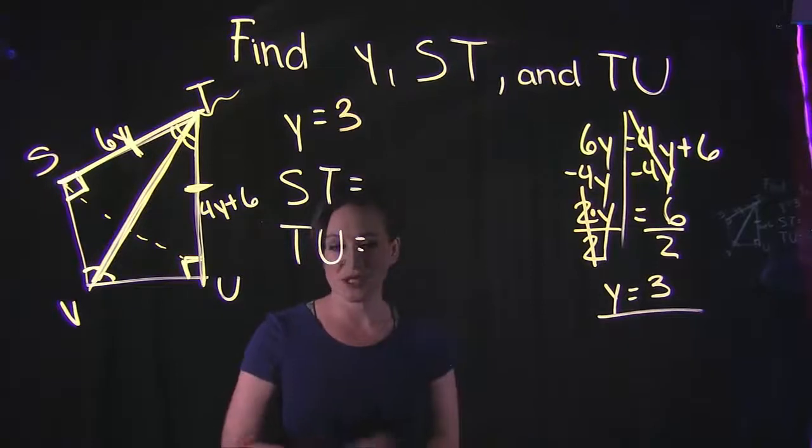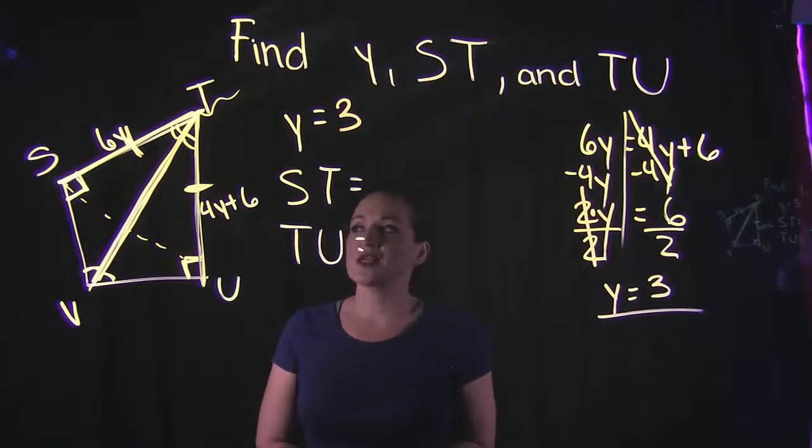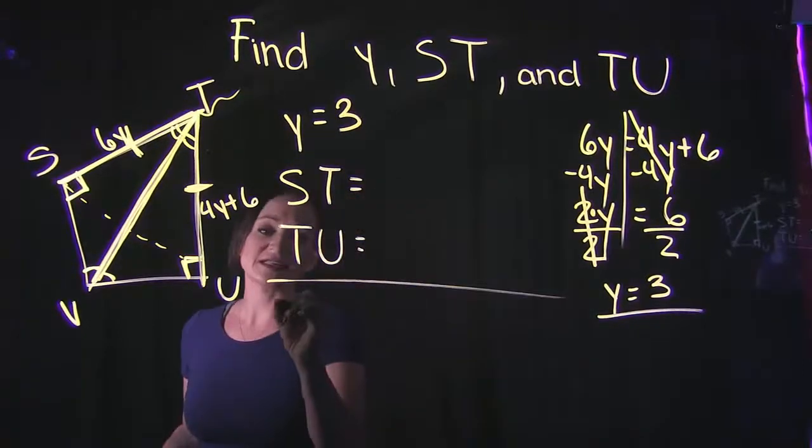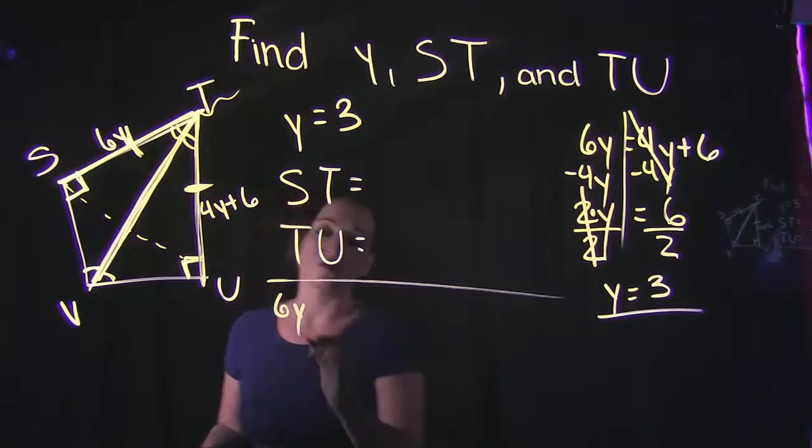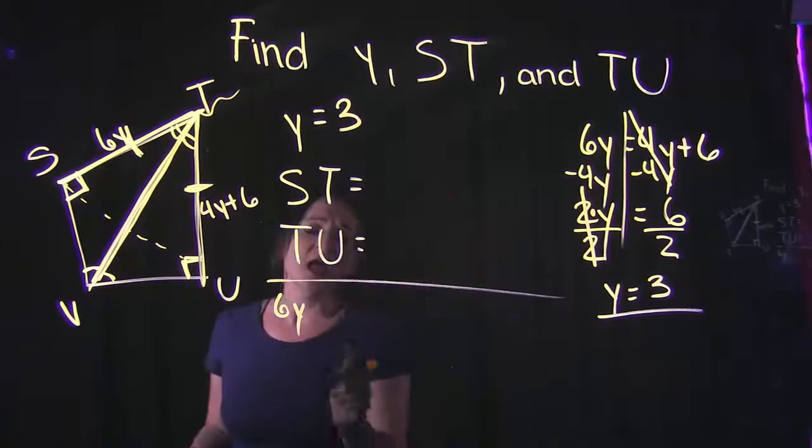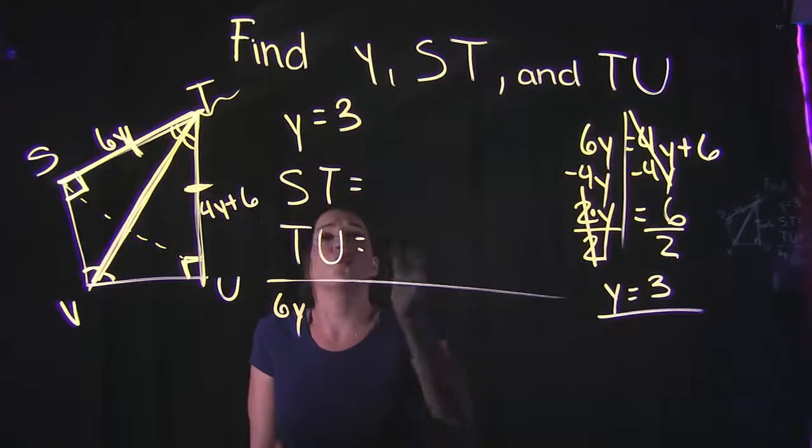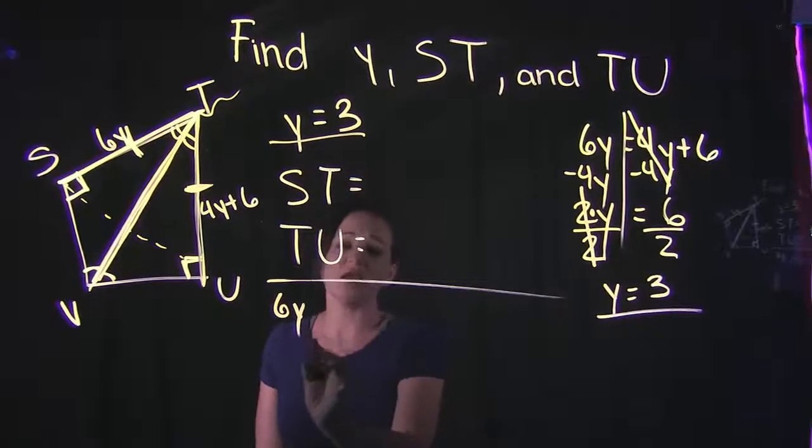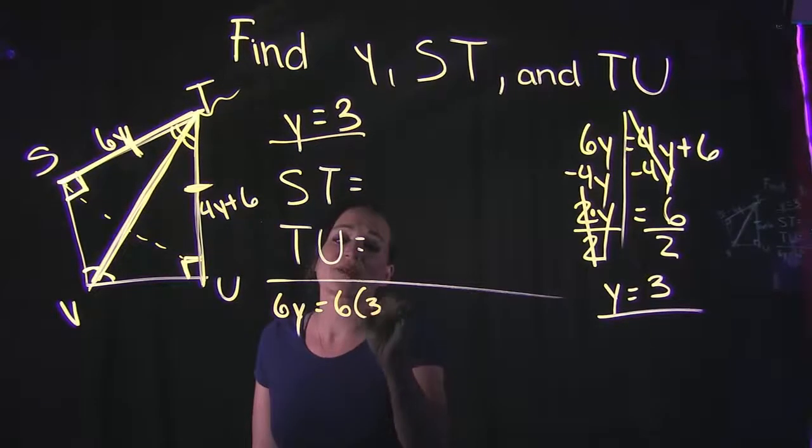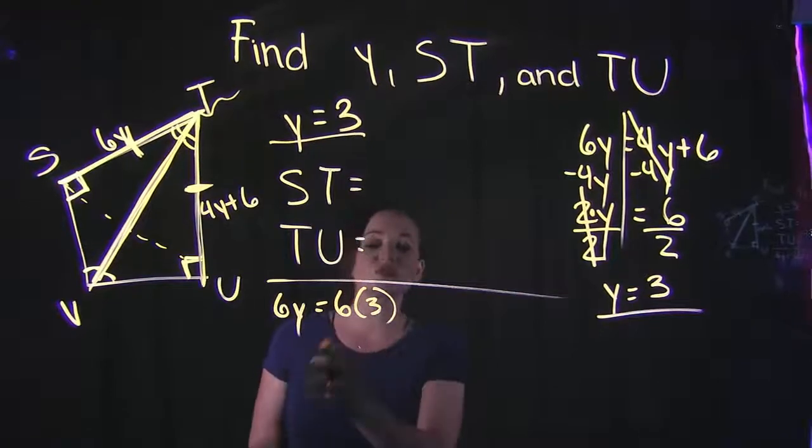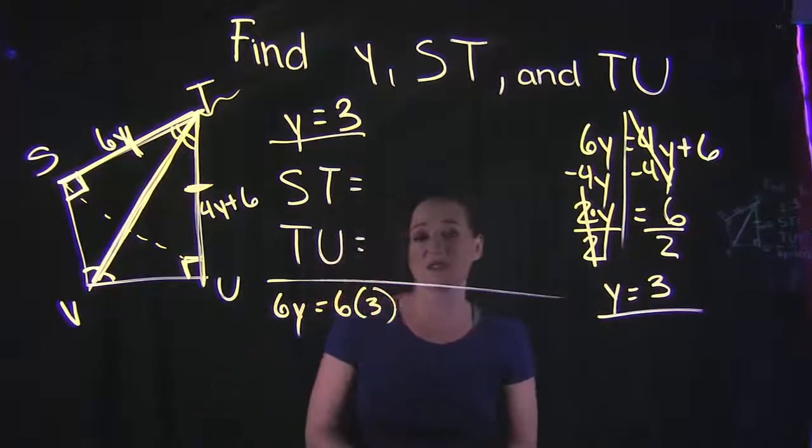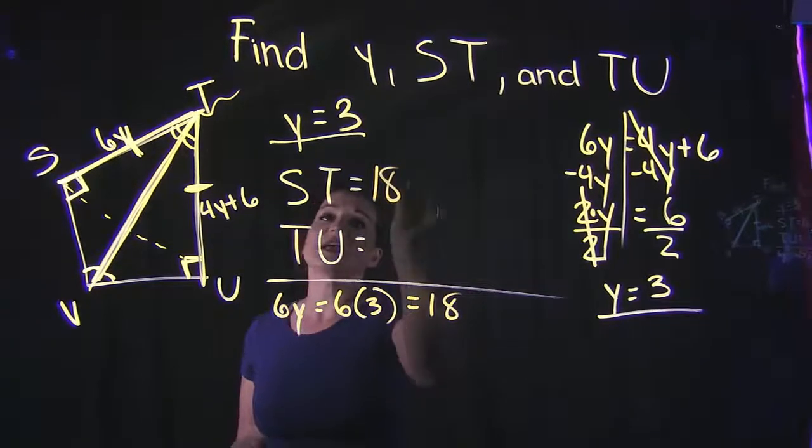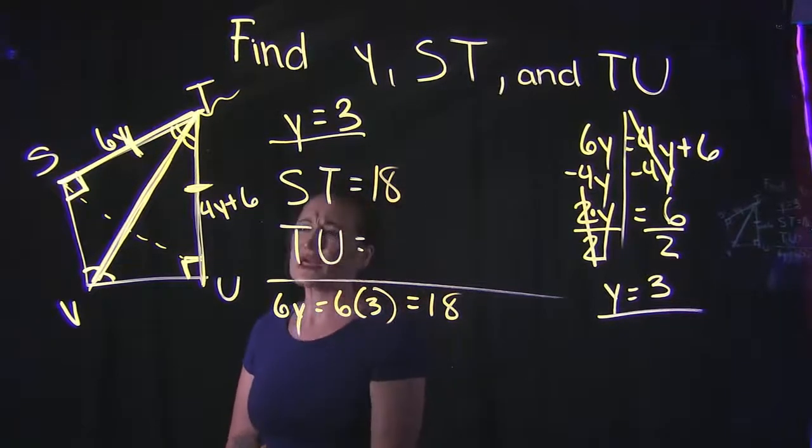The other things we wanted to find was ST and then TU. Now, keep in mind, remember that ST is equal to 6y—that's what that side is. And if we know what y is now, what we're going to do here is a substitution. If y is equal to 3, that means instead of y I can plug in a 3 for it. So 6y becomes 6 times 3, and 6 times 3 is 18. So that tells us that ST is equal to 18.